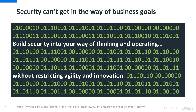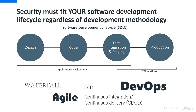The prevalence of issues is in part due to the tension between business goals and security goals. A primary business goal is to generate revenue with product and feature releases — you can't slow innovation down and still be competitive. A fundamental principle of application security is, therefore, to build security into your way of thinking and operating without restricting agility and innovation. Building security into your way of thinking and operating means your development approach doesn't matter. Whether it's Waterfall, Agile, or DevOps, security must fit into your development lifecycle.